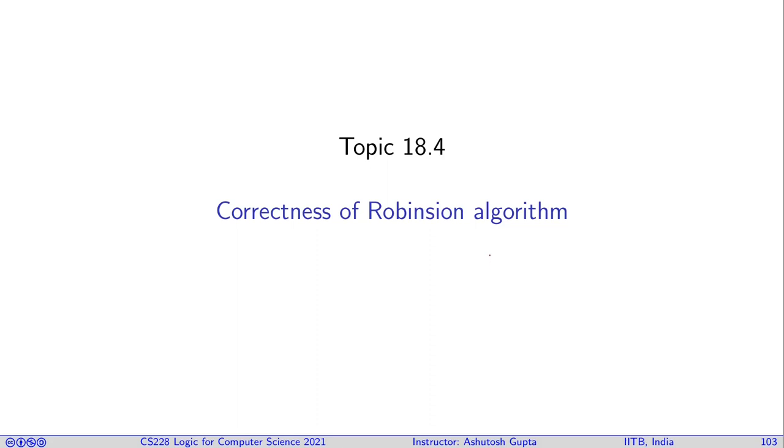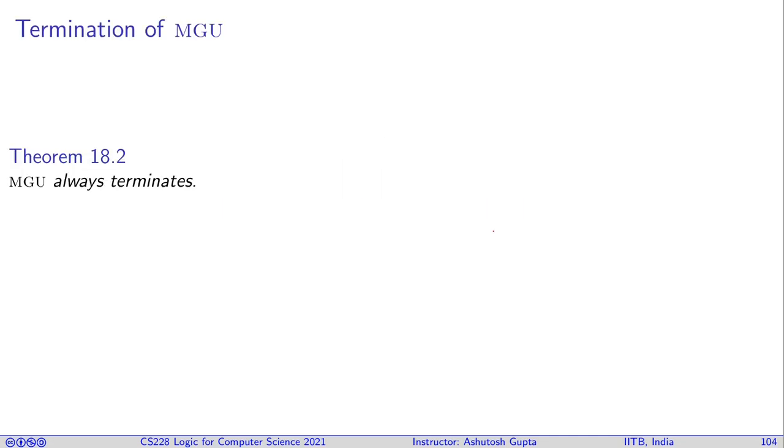We have seen Robinson's algorithm, however we are not sure of its correctness. We need to show that if this algorithm terminates, when it terminates it returns an MGU. So let's first try to see what's the termination argument for this algorithm.